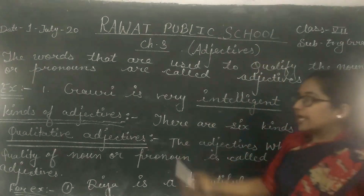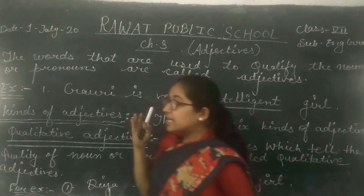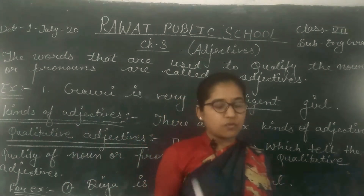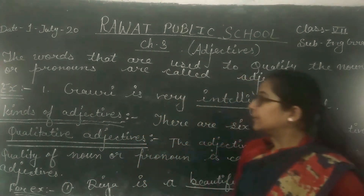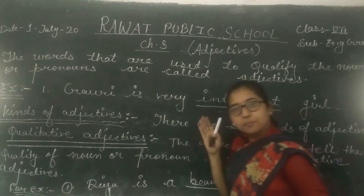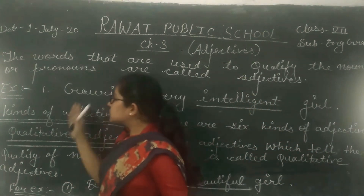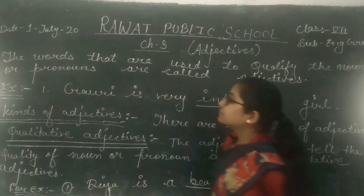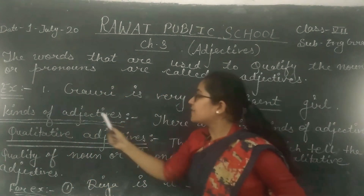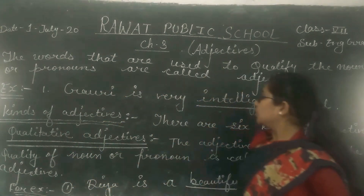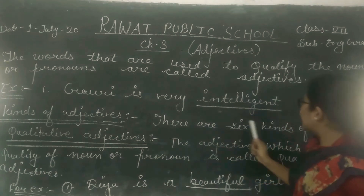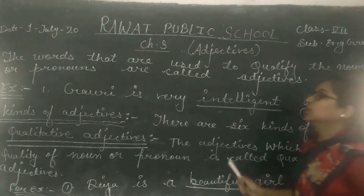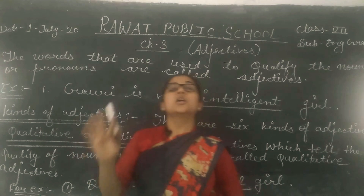So there are many kinds. There are 6 kinds of Adjectives. I have already told you in our previous classes. So what are the 6 kinds of Adjectives? There are 6 kinds of Adjectives.